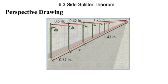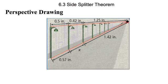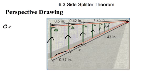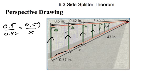So what are we talking about? We're doing the side splitter theorem. Let's check out perspective drawing — this is called one-point perspective. If it's based off of one point, and then you draw lines out of it, you can make things look 3D or like they're coming out of the paper, like this is a road. What's cool about this is these are all parallel lines. This segment is proportional to this segment, just like this segment is proportional to this segment. So you can say 0.5 is to 0.42 just as 0.57 is to X, and then you can find X. Perspective drawing is pretty cool.